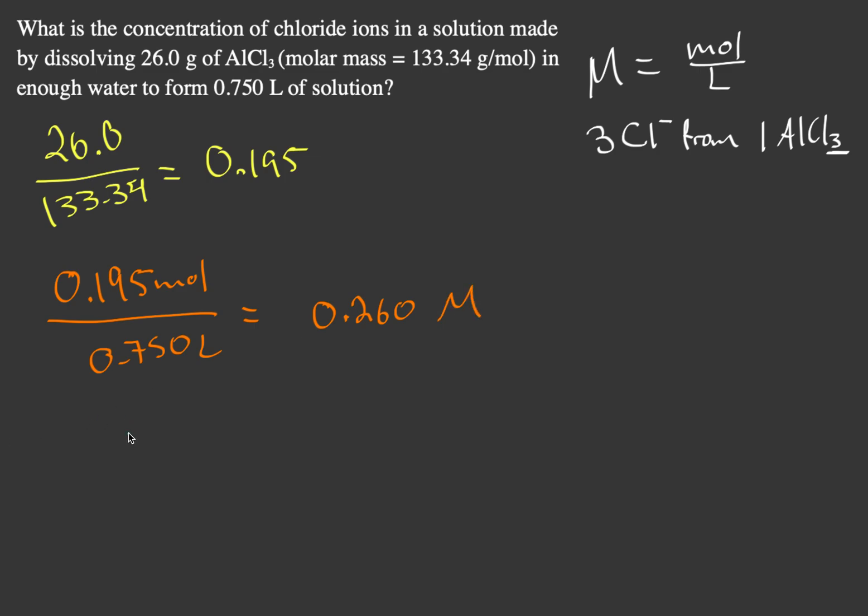Then, taking 0.260 molar of aluminum chloride (AlCl3) and multiplying by three chloride ions per one aluminum chloride, we get 0.780 molar of chlorine ions.